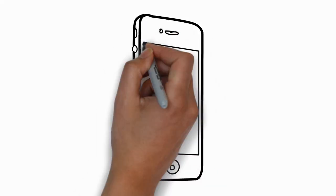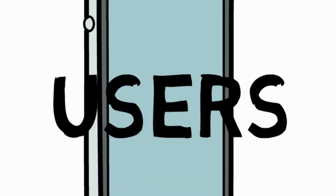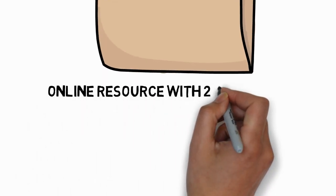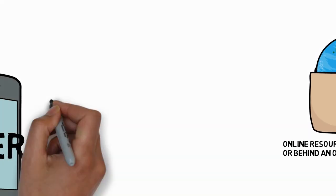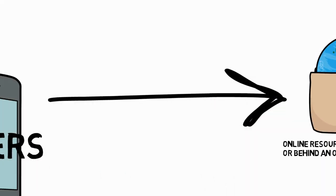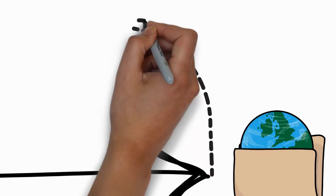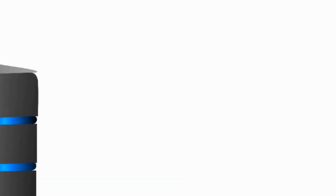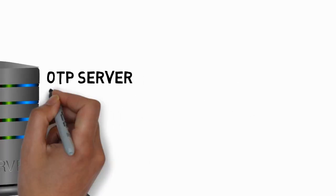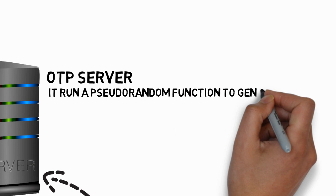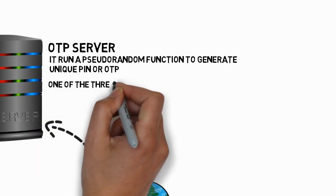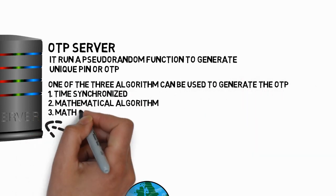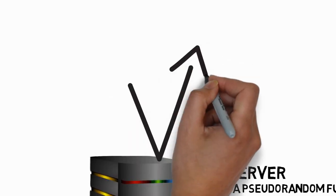Let's look at it on the animation board as to how it works in the background. Today users can access resources from an array of handheld devices, and resources are available on the World Wide Web. These resources could be behind two-step login or OTP authentication. When a user tries to access such information, the request is transferred to an OTP server. The server runs a pseudo-random function and generates a pin or OTP. The function could be based on a time-synchronized algorithm, a mathematical algorithm, or a mathematical challenge algorithm.